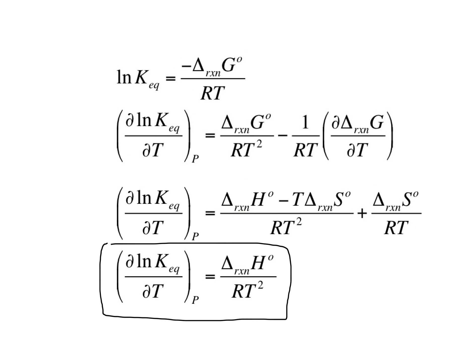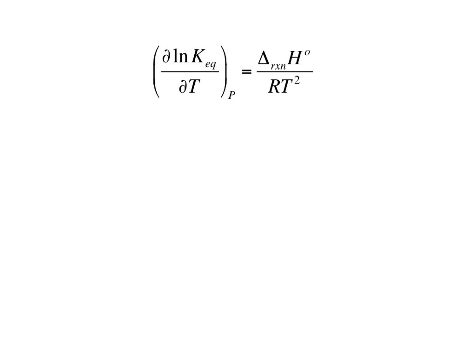Given the standard state value for the delta H of reaction, we can then separate variables and integrate to find the equilibrium constant as a function of temperature. Separating variables leads to D natural log of K-eq is equal to delta H of reaction, standard state, divided by R, times DT over T squared.